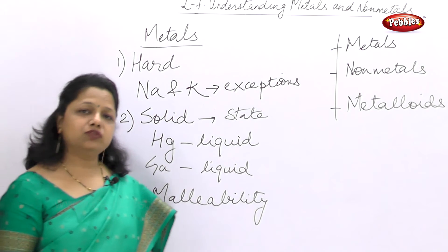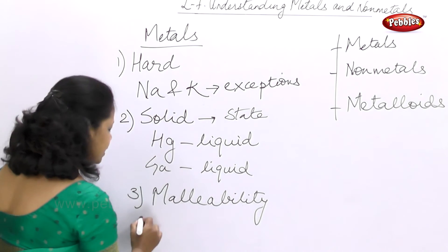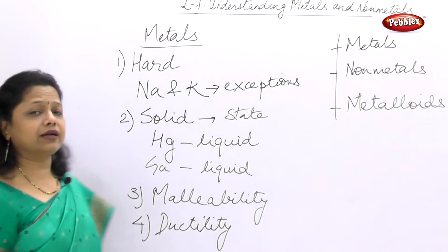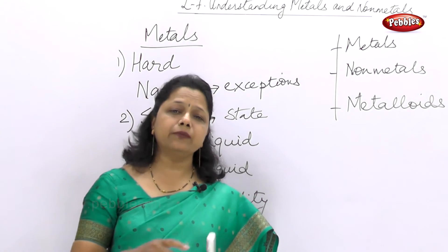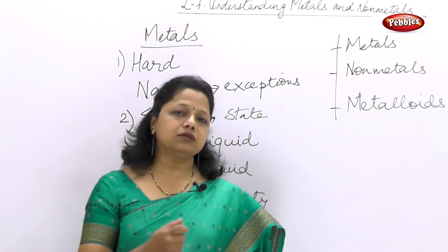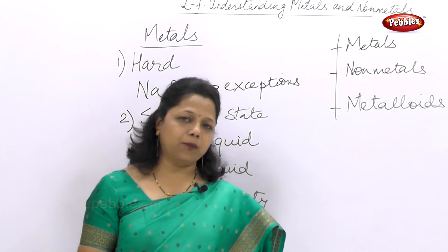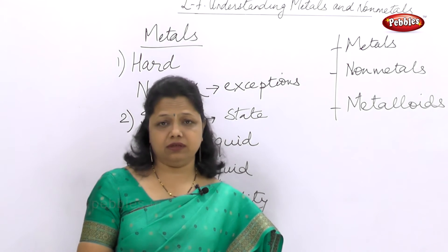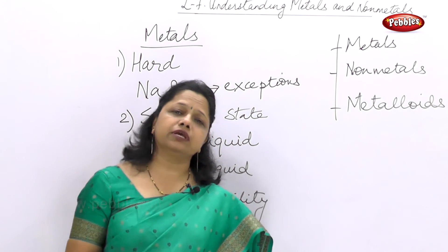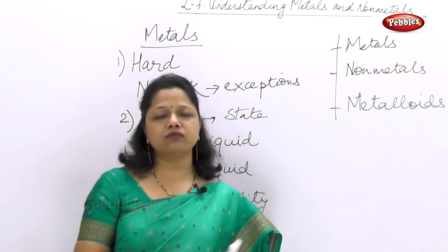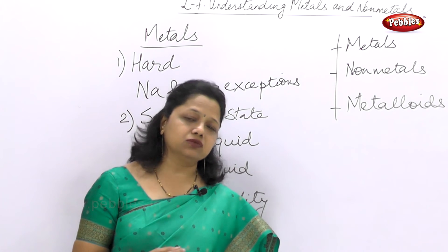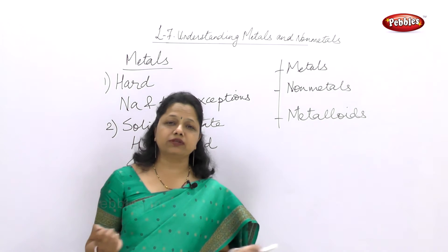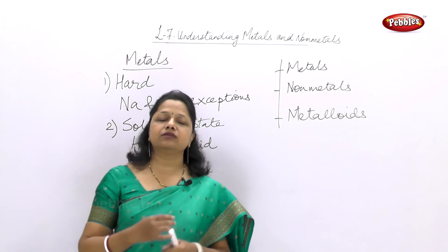The fourth property is ductility. Ductile metals are metals which can be changed into thin wires, and this property is called ductility. We see this in electric circuits where copper wires are used. Gold and silver wires are used in making ornaments. In fact, one gram of gold can be changed into a two-kilometer wire — gold is a fantastic ductile element.